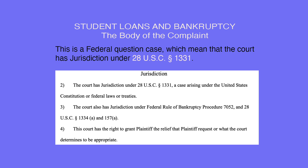For the next heading that says Jurisdiction, you do not underline this heading or any heading after this — just make sure it is centered. This is a federal question case, which means the court has jurisdiction under 28 USC Section 1331. You'll write: 'The court has jurisdiction under 28 USC Section 1331, a case arising under the United States Constitution or federal laws or treaties. The court also has jurisdiction under Federal Rule of Bankruptcy Procedure 7052 and 28 USC Section 1334(a) and 157(a). This court has the right to grant the relief that the plaintiff requested or what the court determines to be appropriate.'